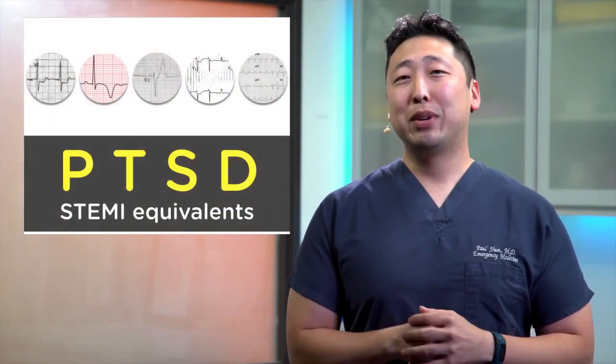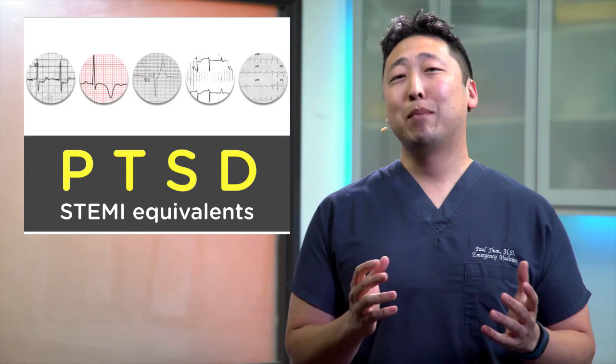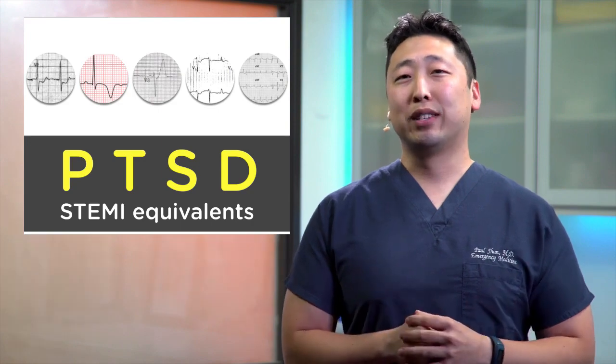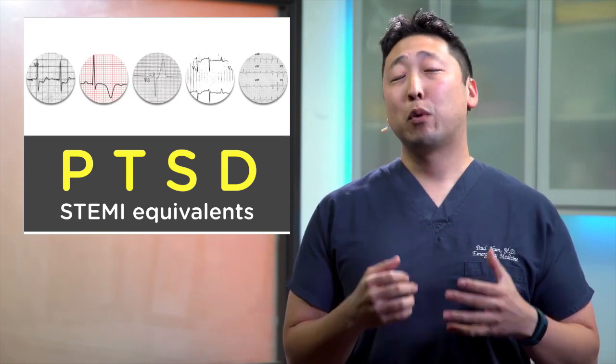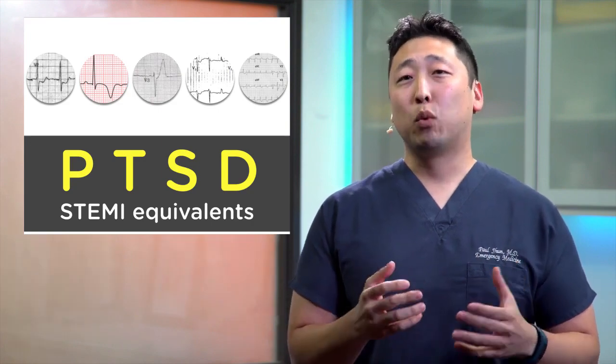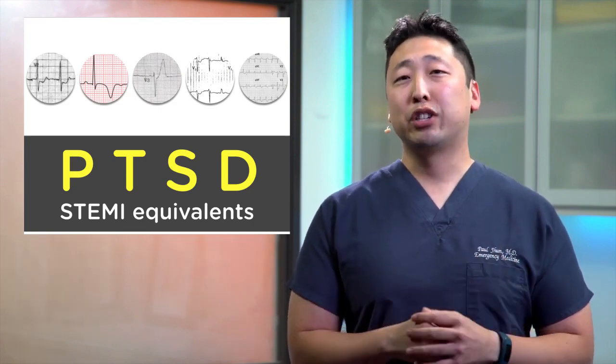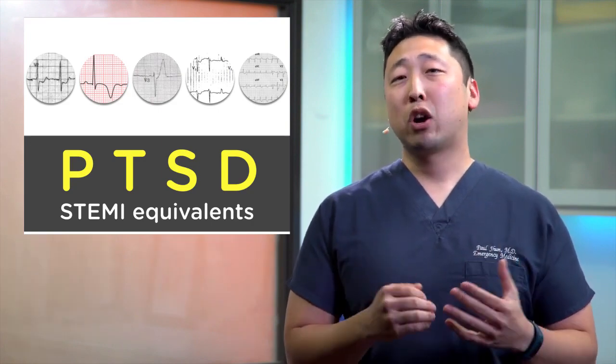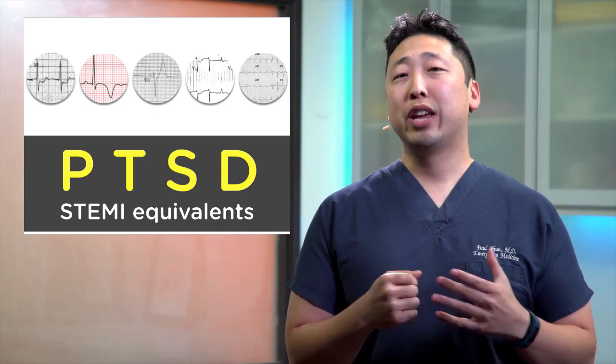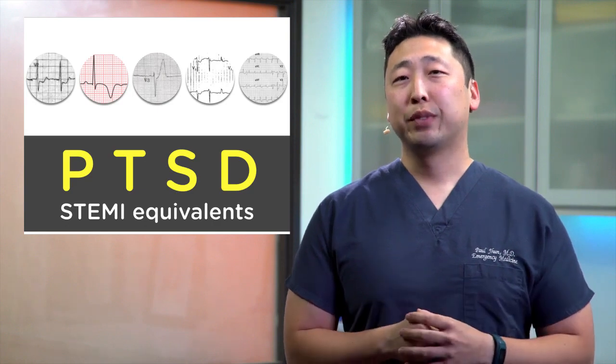PTSD. Avoid getting PTSD by not missing these STEMI equivalents. P is for posterior MI with ST depression and prominent R-wave in V1 and/or V2.